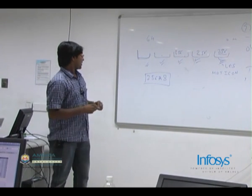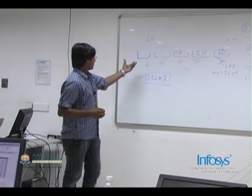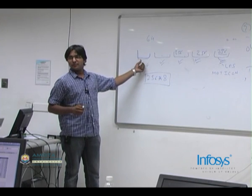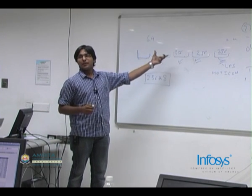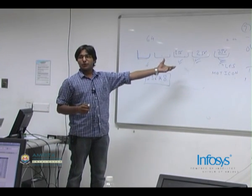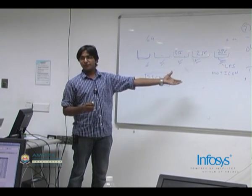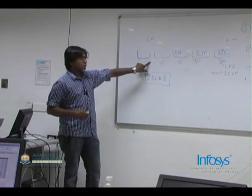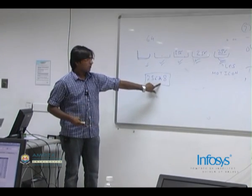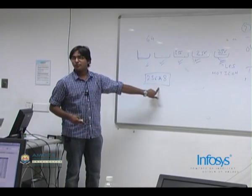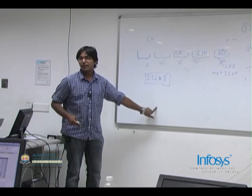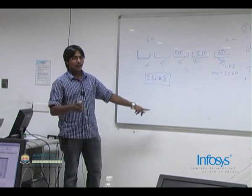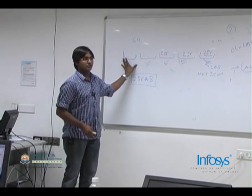If you increase the group size — say make it 13 bits — it might be possible to answer queries in 5 steps instead of 8, but then you will have to store more matrices and do greater preprocessing. So there is a trade-off between what group size to choose.